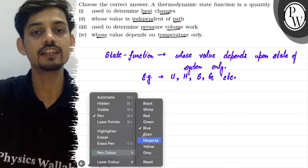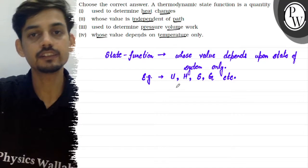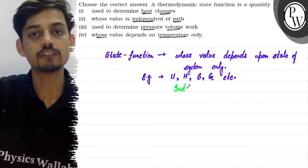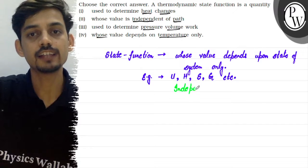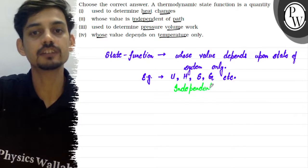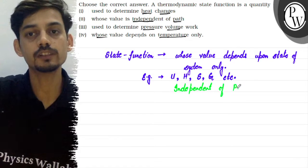And these functions' values are independent of the path of the system, the path of the process. So we call these state functions - independent of path of the process.